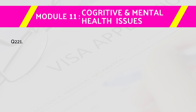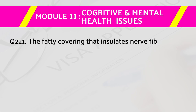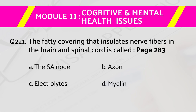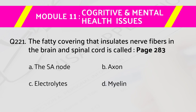Question number 221: The fatty covering that insulates nerve fibers in the brain and spinal cord is called — page number 283. Answers are: a) the SA node, b) axon, c) electrolytes, d) myelin. The right answer is d) myelin.